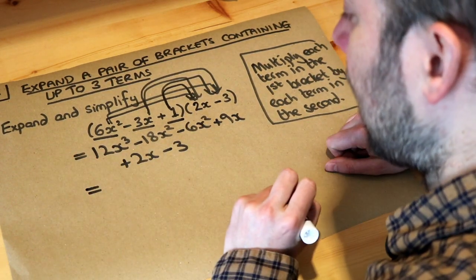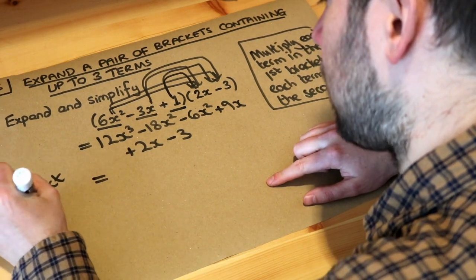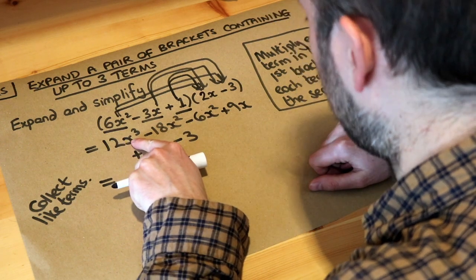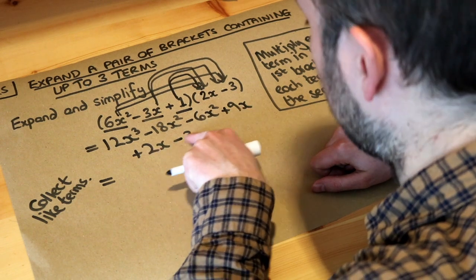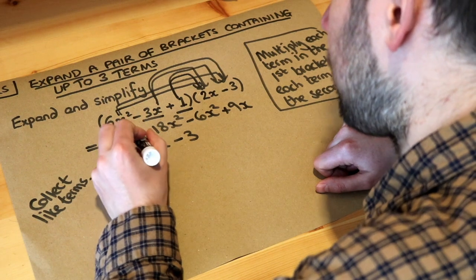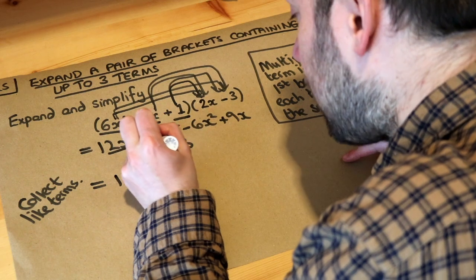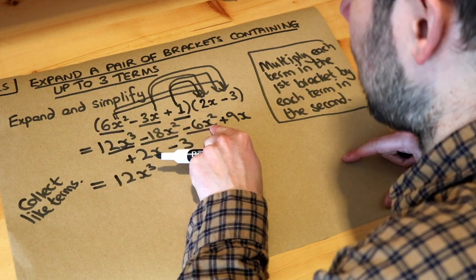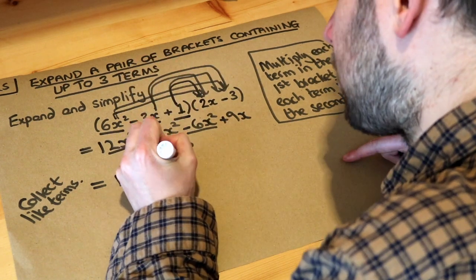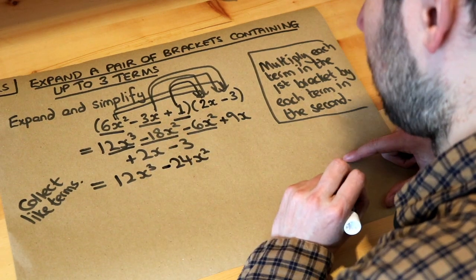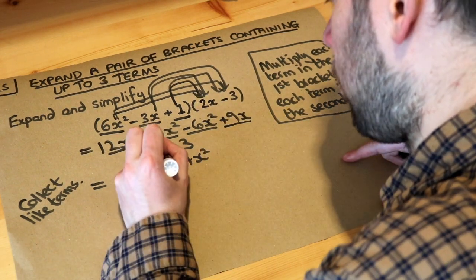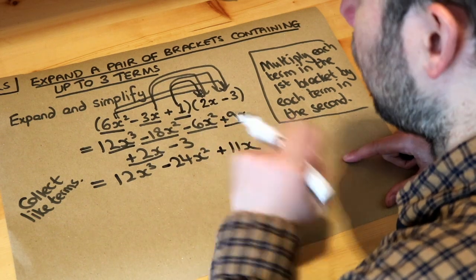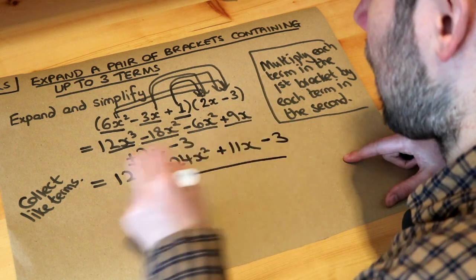Now the second stage is to collect like terms. Terms are like terms if they have the same variables and the same powers. We've got one x³ term: 12x³. For x²: minus 18x² and minus 6x² — minus 18 minus 6 is minus 24, so minus 24x². For the x terms: plus 9x and plus 2x — that's 11x. And finally the constant term with no x: minus 3. So the final answer is 12x³ − 24x² + 11x − 3.